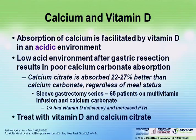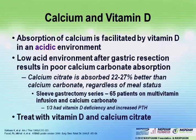Calcium and vitamin D: with PPIs or gastric resection, low acid results in poor absorption of calcium carbonate — the first thing we usually reach for is Tums. Calcium citrate is actually absorbed about 25% better than carbonate regardless of meal status. In a series of patients who had a sleeve gastrectomy, 65% were taking Tums and a multivitamin; a third of those had vitamin D deficiency and an increased PTH. If we have people on high-dose PPIs, especially if gastrin is high, calcium carbonate is probably not a good option — we should be looking at citrate.